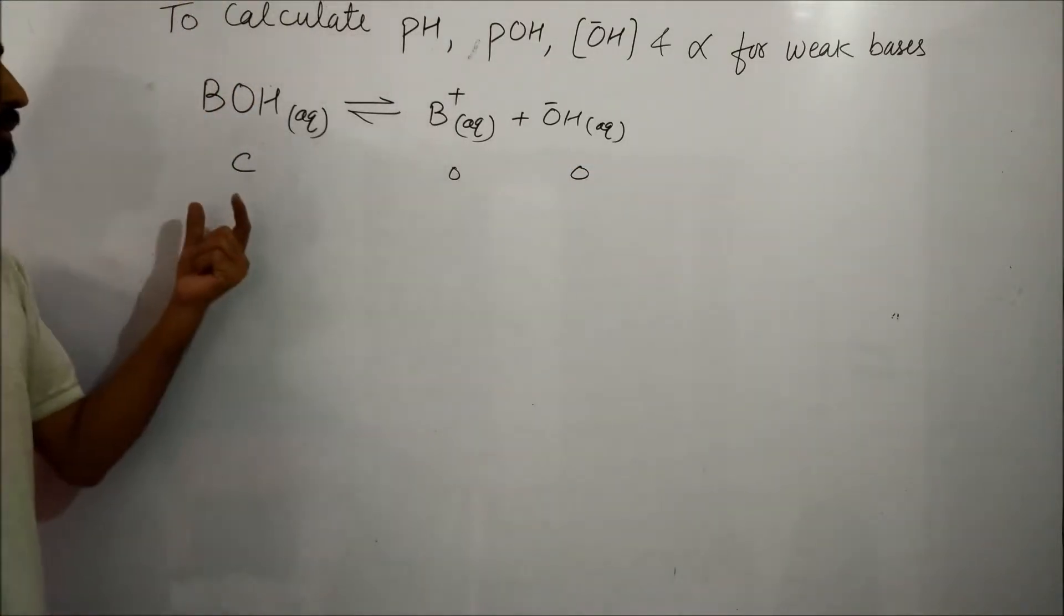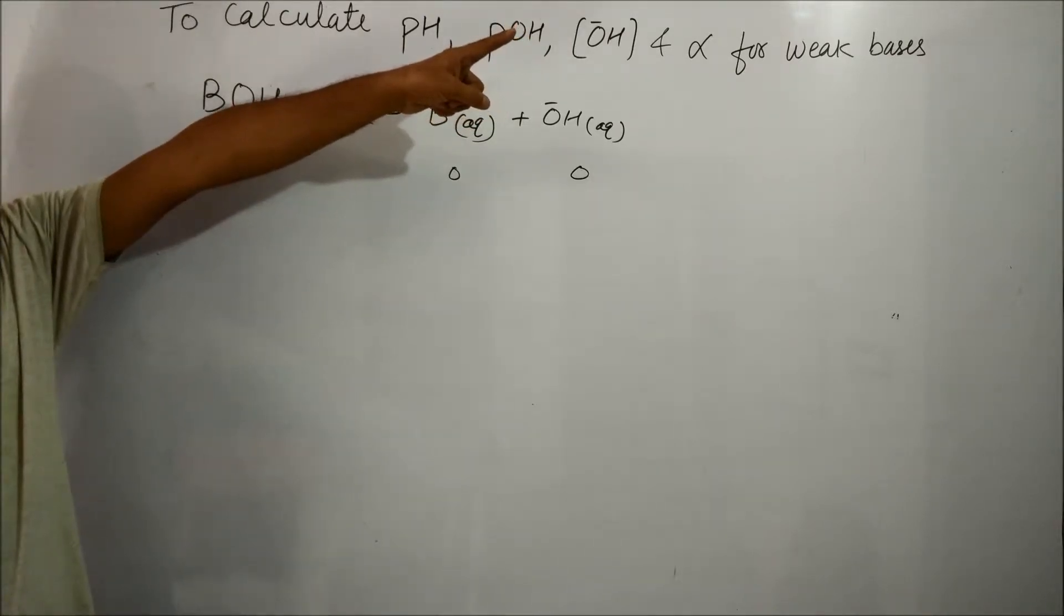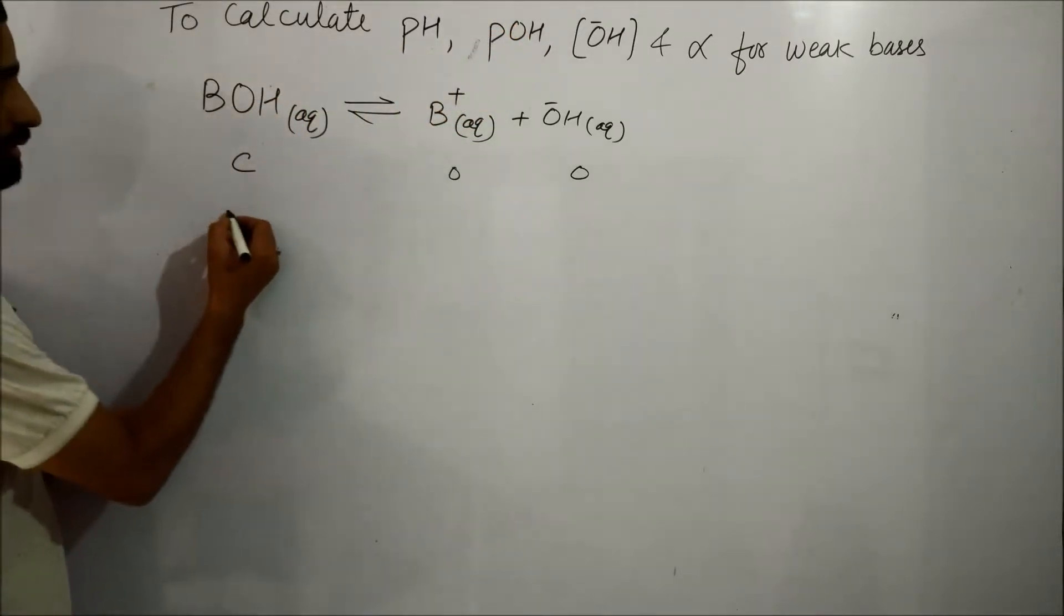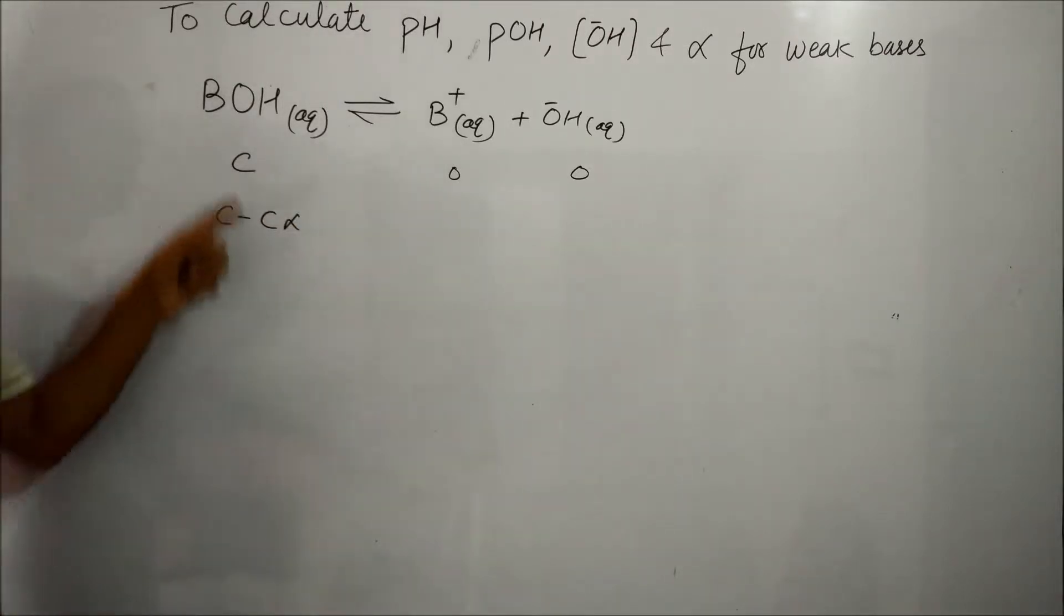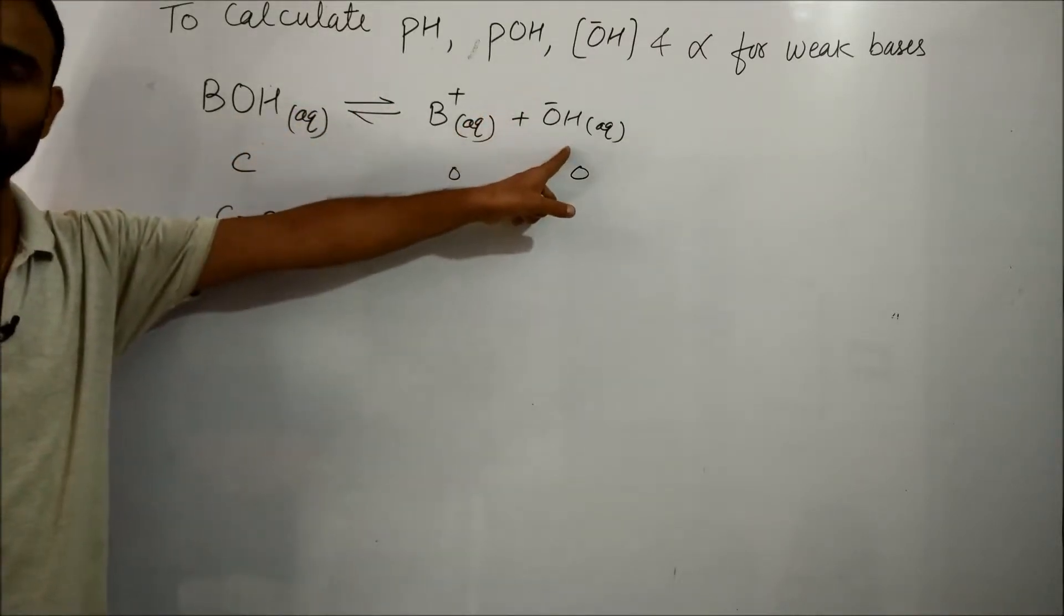At equilibrium, if alpha is the degree of dissociation, then it becomes C minus C alpha. If one BOH gets dissociated, we get one B⁺ and one OH⁻.